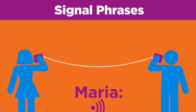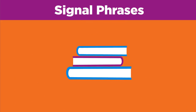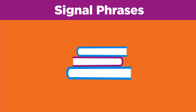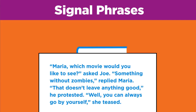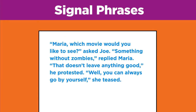When reading a play, a name followed by a colon tells the reader who is speaking. In books, authors also use signal phrases to let readers know who is speaking or thinking. For example: 'Maria, which movie would you like to see?' asked Joe. 'Something without zombies,' replied Maria. 'That doesn't leave anything good,' he protested.